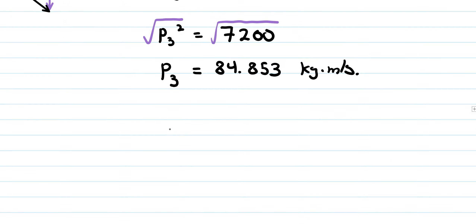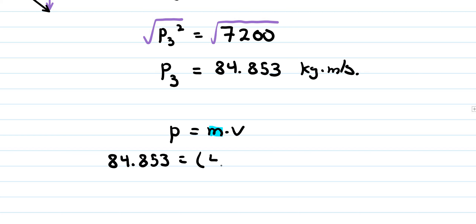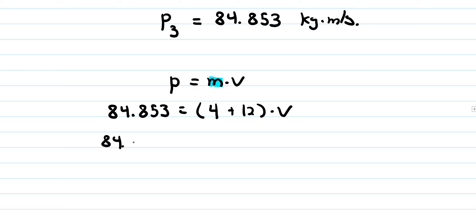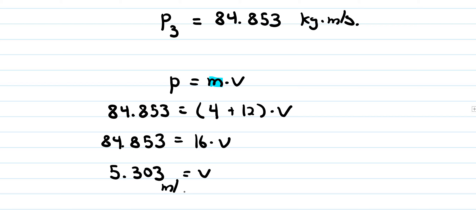Now we want to find the resulting speed. Momentum equals mass times velocity, and the combined momentum is 84.853. The combined mass is 4 plus 12 kilograms, which is 16 kilograms. So speed equals 84.853 divided by 16, which gives us an answer of 5.303 meters per second — the resulting speed of the combined objects.